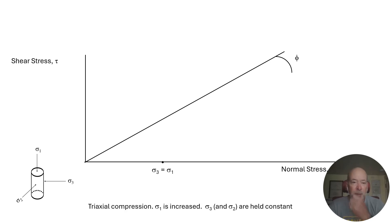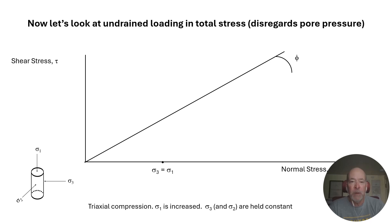And in triaxial compression, sigma one vertical stress is increased and sigma two and three are held constant. So this is where we start to grow our circles.